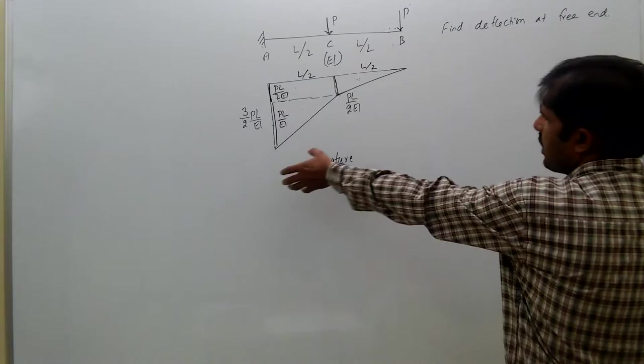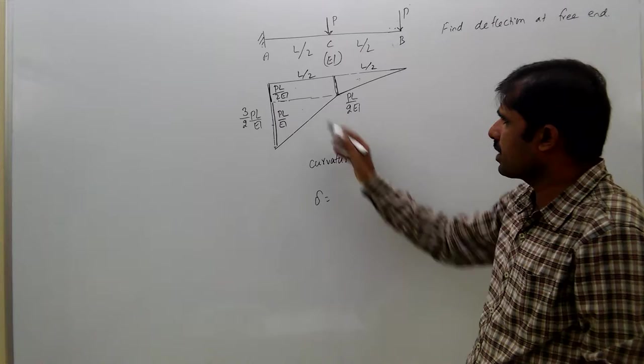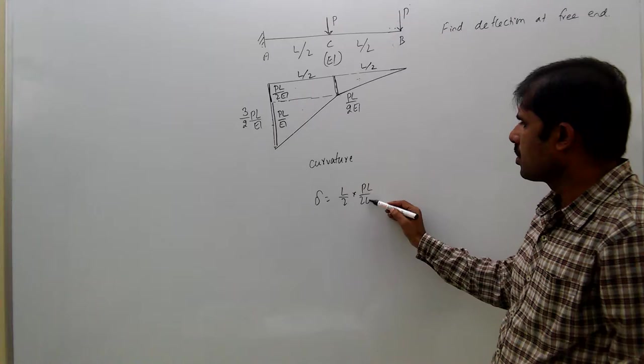So moment of area of this entire figure about B is nothing but sum of individual moment of areas of this rectangle, triangle, and triangle. That means delta equals, first we take the rectangle: that is L/2 is the width, height is PL/2EI, and centroidal distance is L/4 plus L/2.